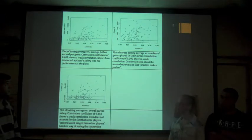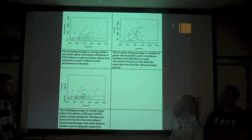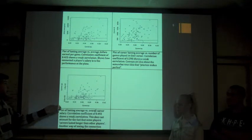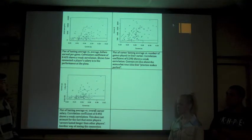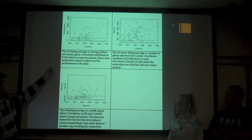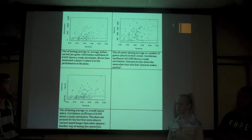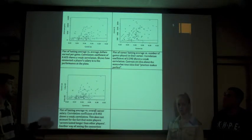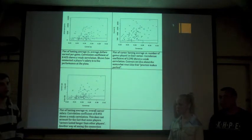We plotted scatter plots to show correlations and determine whether relationships were linear — including career at bats versus salary, career at bats versus number of games played, and batting average versus dollars earned. The top graph and the lower graph are two different ways of looking at the same relationship: one takes into account that some players played longer careers, looking at dollars per game, while the other uses total career salary without adjusting for games played.